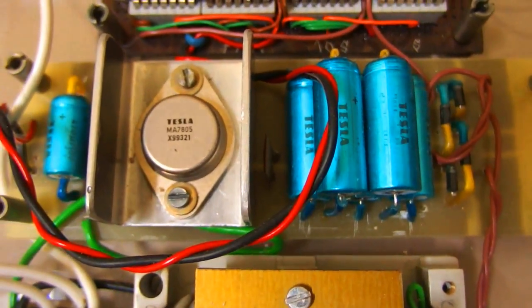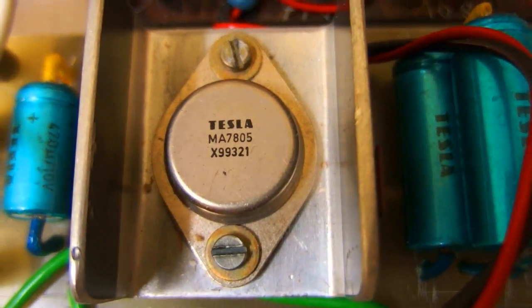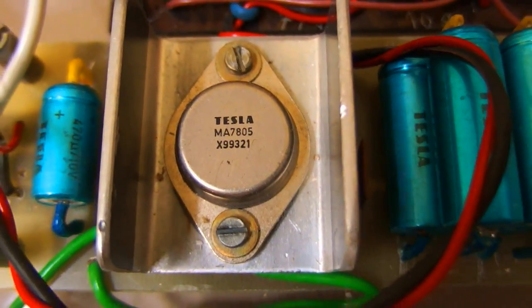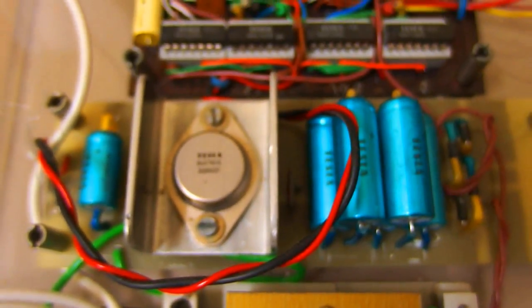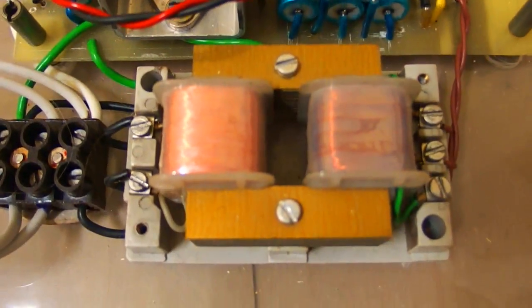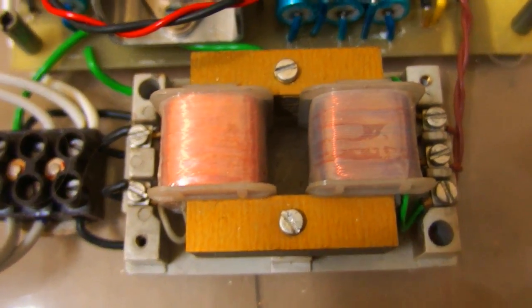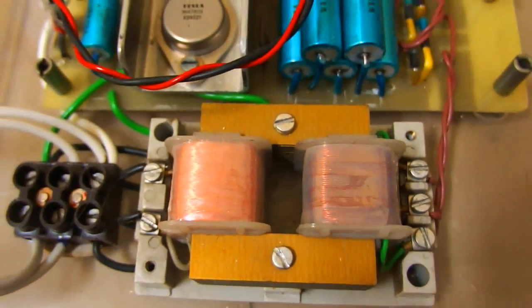This is the power supply with old 7805 from Tesla. And this is the vintage transformer. Everything is original.